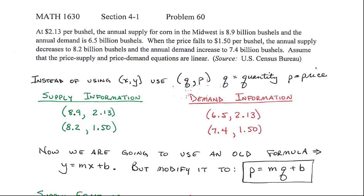Problem 60, I've got at $2.13 per bushel. The annual supply for corn in the Midwest is 8.9 billion bushels. Annual demand is 6.5 billion bushels. When the price falls to $1.50 per bushel, the annual supply decreases to 8.2 billion bushels and the annual demand increases to 7.4 billion bushels. Assume that the price-supply and price-demand equations are linear, and this came from the U.S. Census Bureau.